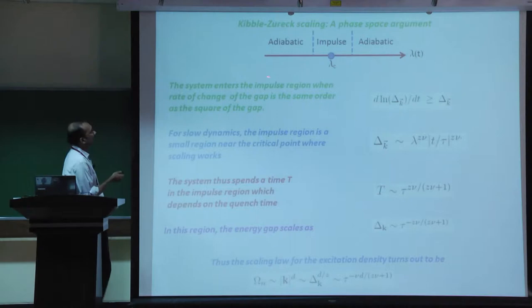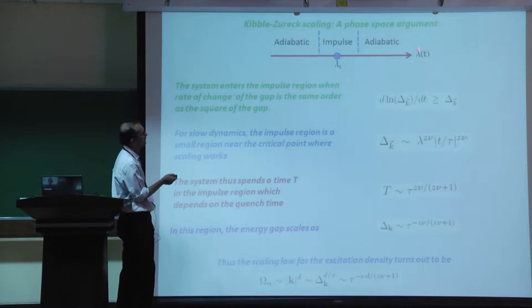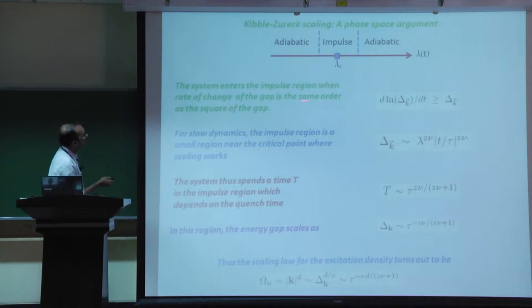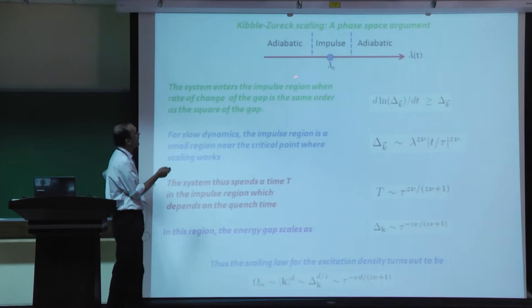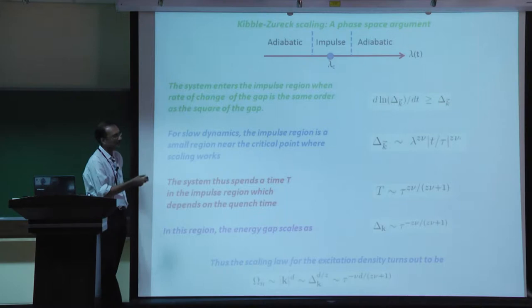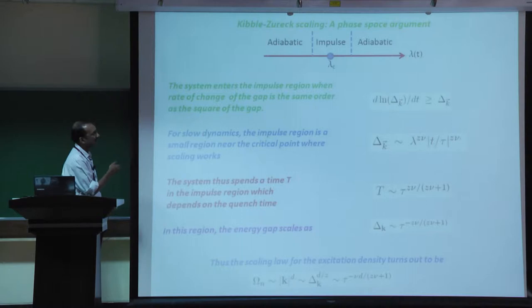Let me refresh your memory about the Kibble-Zurek scaling argument. If you take a quantum system through some critical point by varying one of its parameters as a function of time, the system enters the so-called impulse region where the ground state cannot follow the change in the Hamiltonian anymore.